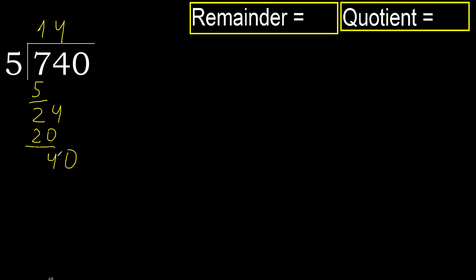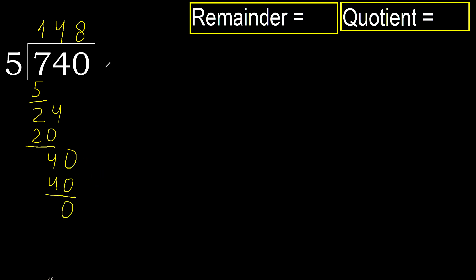40. 5 multiplied by 8 is 40, it is not greater. Subtract: 0. Next — that is not a number, therefore finish it.